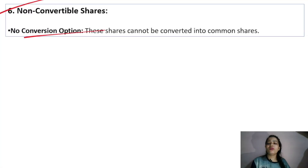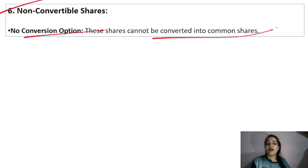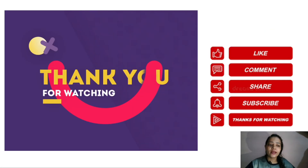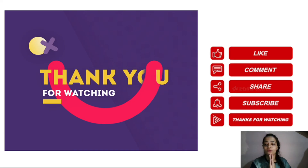The opposite of convertible shares is non-convertible shares — there is no conversion option, meaning you cannot convert them into common shares. So these were the types of shares, along with their meaning, which we discussed. I hope you understood. Please like, subscribe, and share the video. Thank you, see you next time.